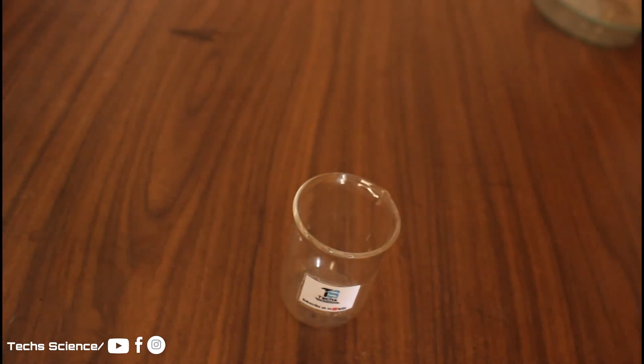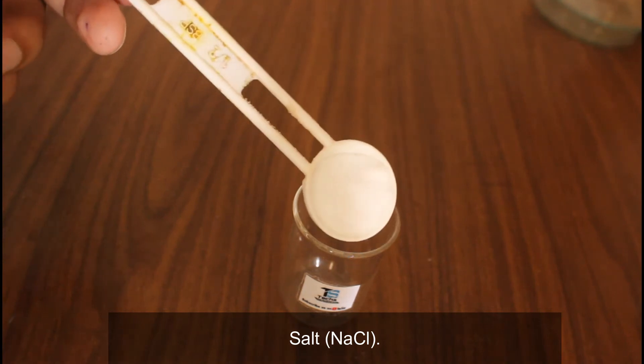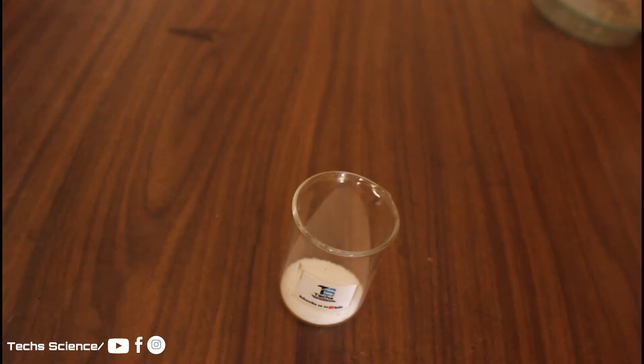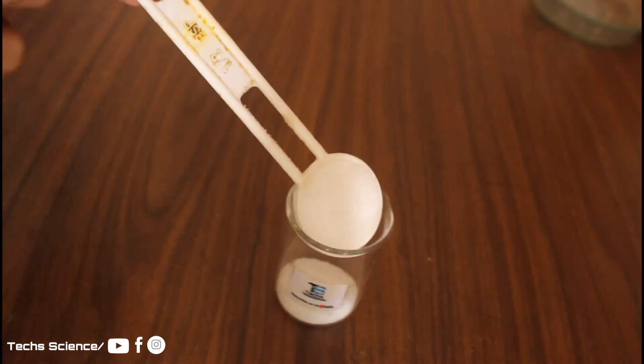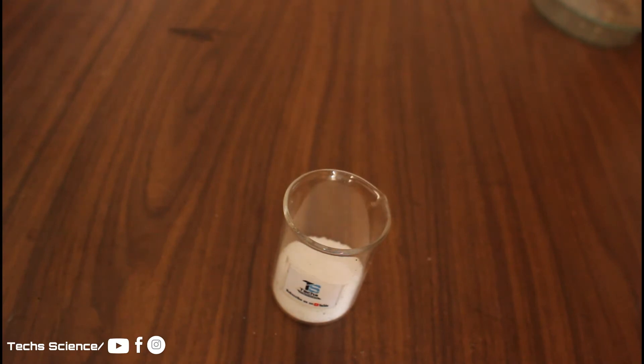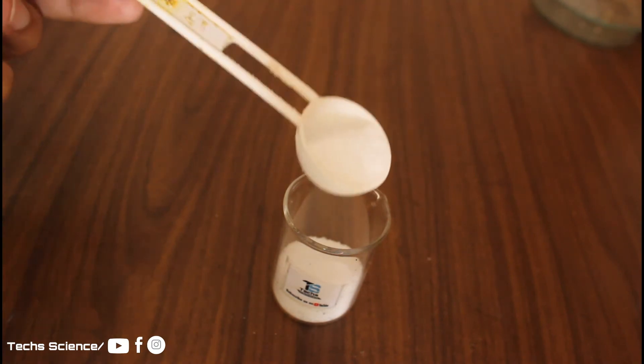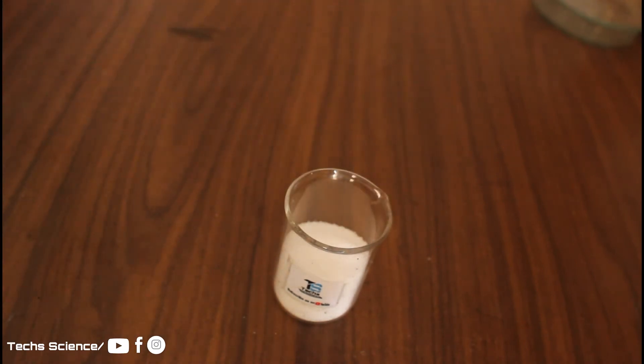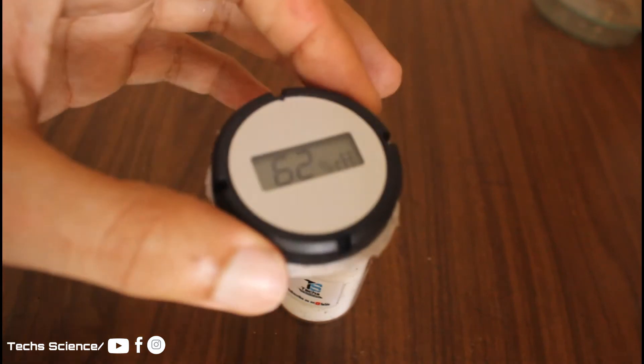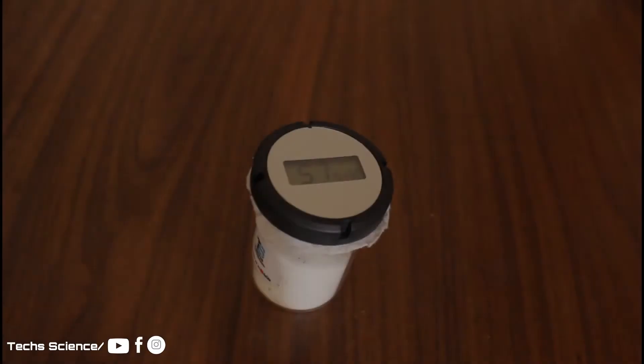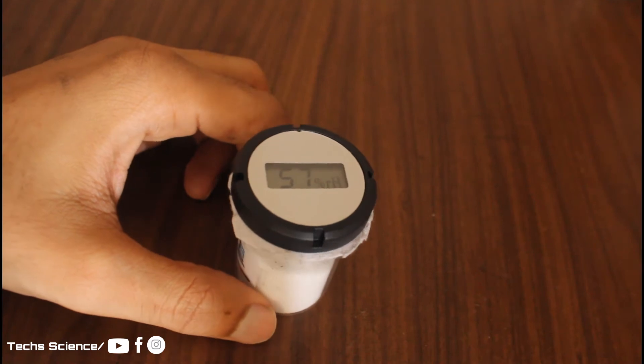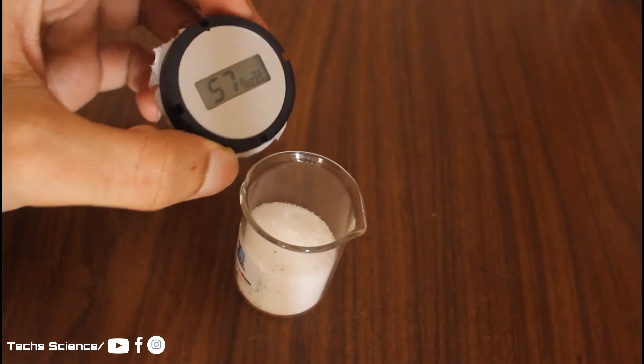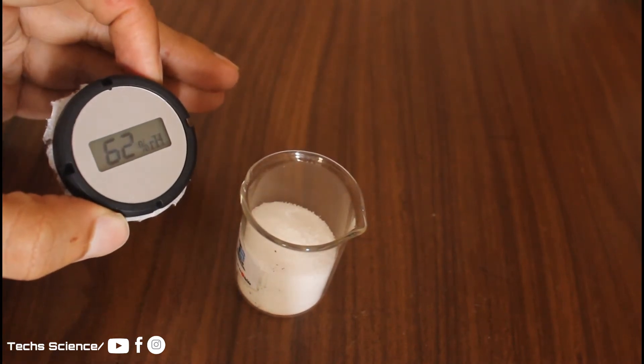Next is table salt. Here the room humidity is 62%. Let's see if we get any difference. After five minutes we found a 5% decrement. It seems the salt works better than the charcoal.